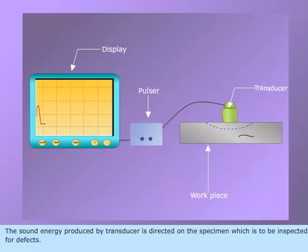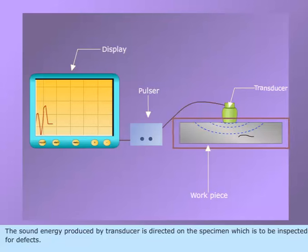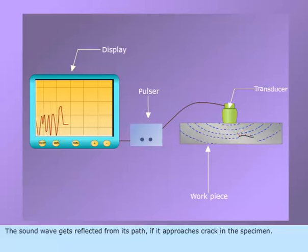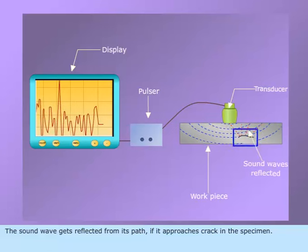The sound energy produced by the transducer is directed on the specimen which is to be inspected for defects. The sound wave gets reflected from its path if it approaches a crack in the specimen.